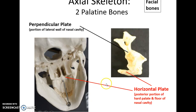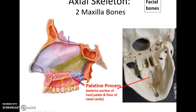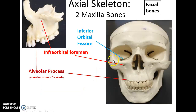The palatine bone is shaped like the letter L. It helps form the roof of the mouth (the hard palate, posterior portion), as well as part of the nasal cavity and orbit; it has a horizontal plate forming the roof of the mouth and a perpendicular plate. The maxilla bones — there are two — help form the anterior hard palate, the floor of the nasal cavity, hold the upper teeth, and help form the orbit. The portion of the maxilla that forms the hard palate is called the palatine process. The maxilla also helps form the inferior orbital fissure, has an infraorbital foramen below the orbit, and the alveolar process holds the upper teeth.